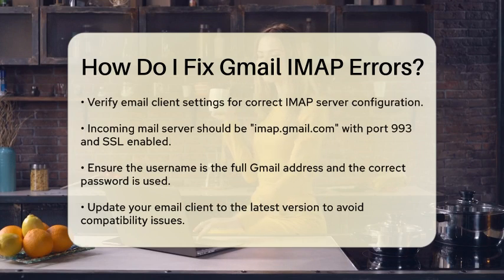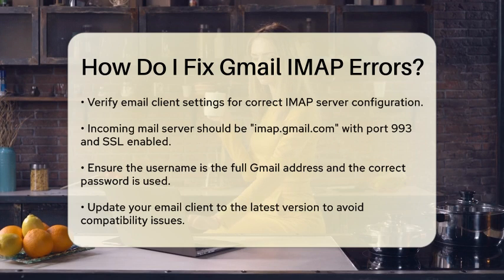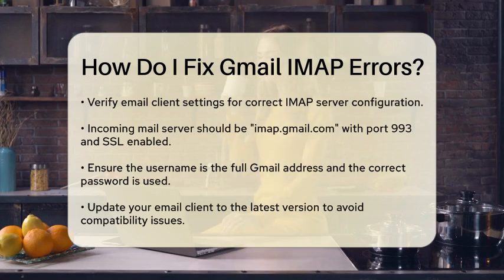Next, check your email client settings. Make sure that you are using the correct server settings for IMAP. For Gmail, the incoming mail server should be imap.gmail.com, and the port number should be set to 993 with SSL enabled. Double-check that your username is your full Gmail address and that you are using the correct password. If you are still experiencing issues, consider updating your email client, as outdated software can lead to compatibility problems. Ensure that you have the latest version of your email application installed.